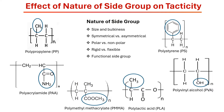The side groups can influence the stereochemical arrangement of the polymer chain during polymerization and affect the polymer's ability to crystallize, its mechanical properties, and its solubility. In this video, I will discuss how the nature of side groups affects polymer tacticity.